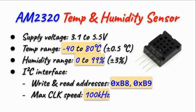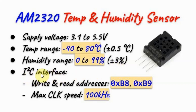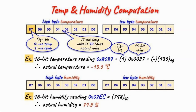The main specs of the AM2320 sensor: supply voltage minimum 3.1V, maximum 5.5V. The temperature range is between minus 40°C to 80°C with a tolerance of plus or minus 0.5°C. Humidity range is from 0 to 99% with a tolerance of plus or minus 3%. It is interfaced with a microcontroller using I2C, with a write address of hexadecimal B8 and a read address of hexadecimal B9. It can run at a maximum clock speed of 100kHz. The AM2320 sensor represents temperature and humidity as 16-bit numbers.